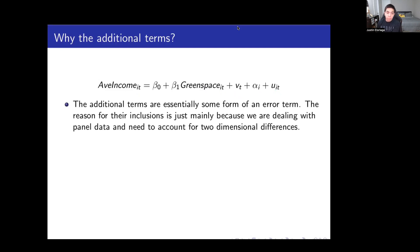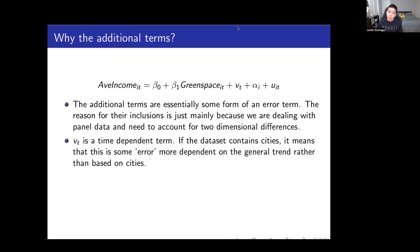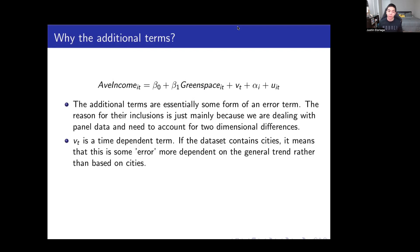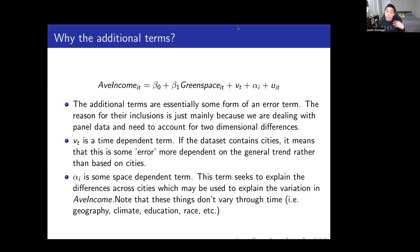The reason for these additional terms is simply because we are dealing with panel data and need to account for the two-dimensional differences we're going to deal with. VT in particular is a time-dependent error term. If the data set contains cities, this is some error that is more dependent on the general trend rather than a city-specific trend. For example, cities around the world are all roughly growing throughout time — cities are getting larger throughout time. That's a time-component thing.